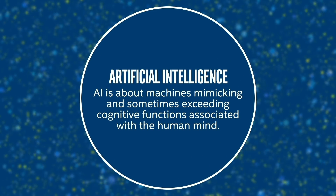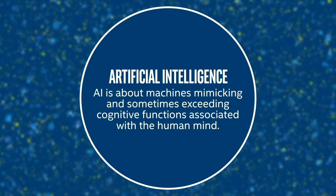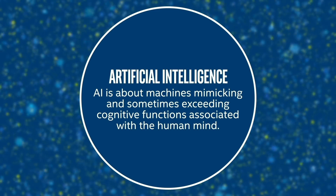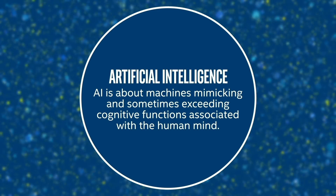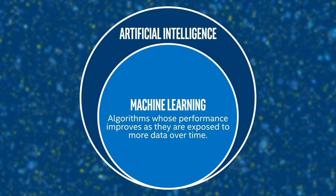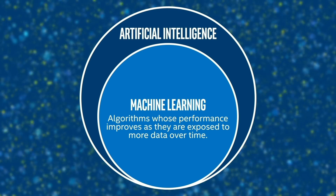Now that we know what is covered in the guide, let's talk about AI as a whole and look at the definition of AI. The term artificial intelligence is continually evolving, but at its core, AI is about machines mimicking and sometimes exceeding cognitive functions associated with the human mind. AI can be thought of as a giant umbrella, with machine learning as a subset.